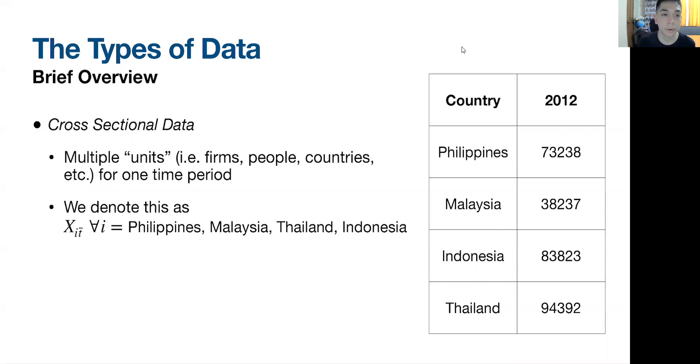Let's start first with the most basic type, which the first module of the term will revolve mainly on, which is cross-sectional data. A cross-sectional data set is essentially a data set wherein you have multiple units or cross-sectional units. They could be firms, people, countries, regions, etc. for one time period.